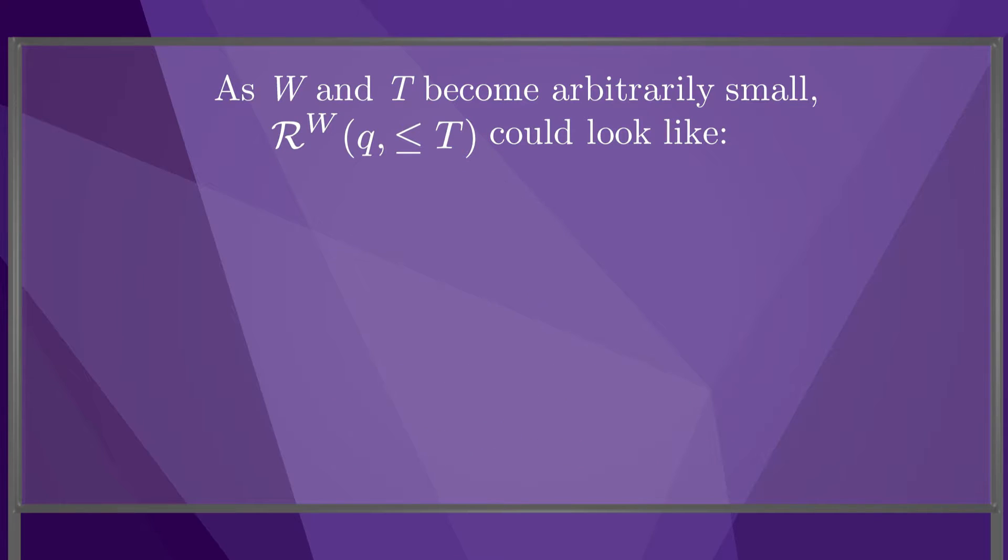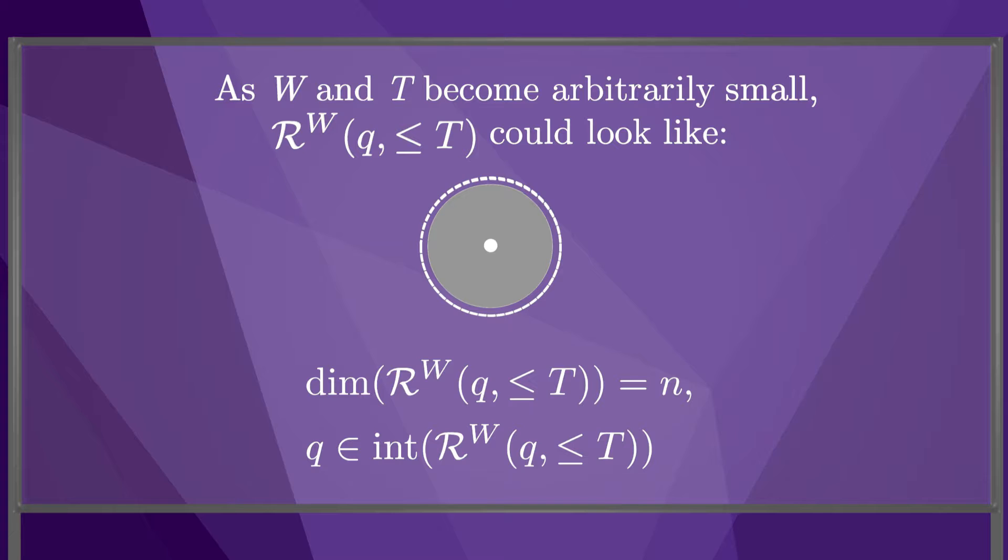A final alternative is that the locally reachable set looks like this. The reachable set is full-dimensional and the initial configuration is in the interior of the reachable set. This means the robot can locally move in any direction.